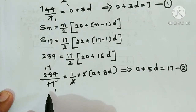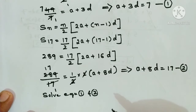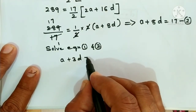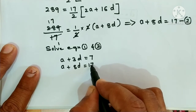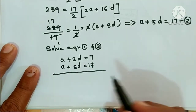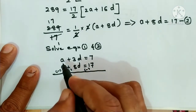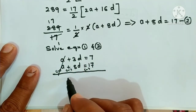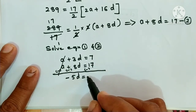Now solve equation 1 and equation 2. Equation 1: a plus 3d is equal to 7. Equation 2: a plus 8d is equal to 17. Subtract equation 1 from equation 2. Change the sign: a minus a gets cancelled. Plus 3d minus 8d gives minus 5d. On the right side: minus 17 plus 7 is equal to minus 10.